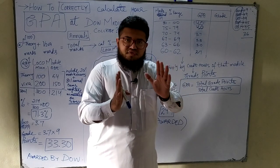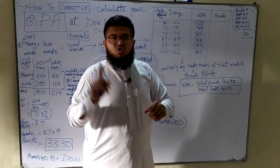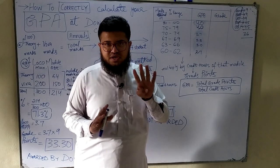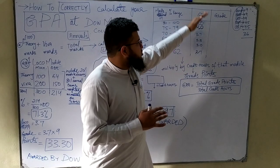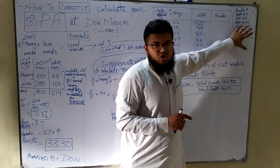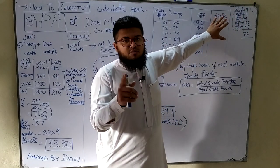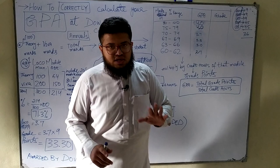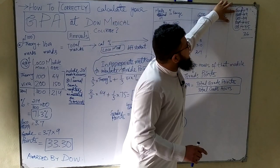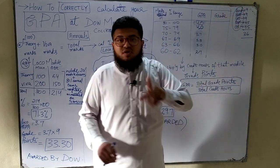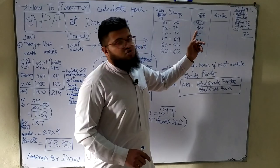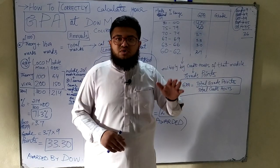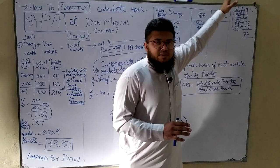Think of credit hours as the weightage of different modules in your overall GPA. Your GPA is calculated out of 4 — 4 is the highest. The different modules that appear in the annual exams each have a certain weightage in your GPA, and that weightage is indicated by their credit hours. For example, Foundation module has nine credit hours and Respiratory has 4.5 — this means Foundation has more weightage compared to Respiratory in the GPA.